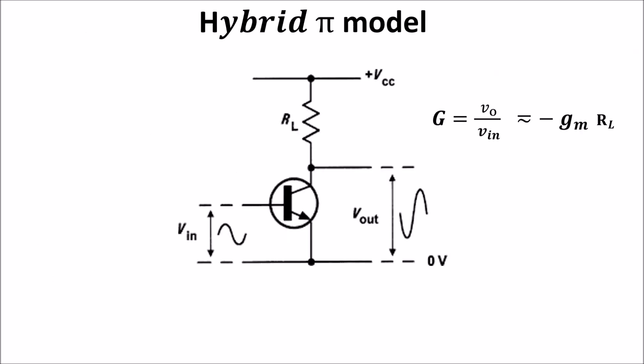The minus sign means that there is a phase shift of 180 degrees. So the output signal is the amplified inversion of the input.